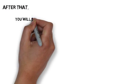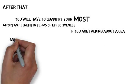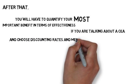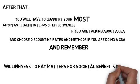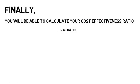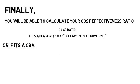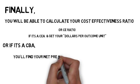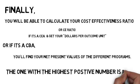After that, you will have to quantify your most important benefit in terms of effectiveness if you're talking about a CEA, and choose discounting rates and methods if you're doing a CBA. Remember, willingness to pay matters for societal benefits in CBAs. Finally, you will be able to calculate your cost-effectiveness ratio, or CE ratio. If it's a CBA, you'll find the net present value of the different programs, and the one with the highest positive number is best.